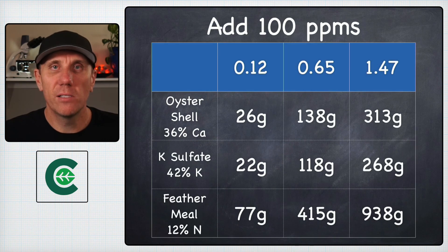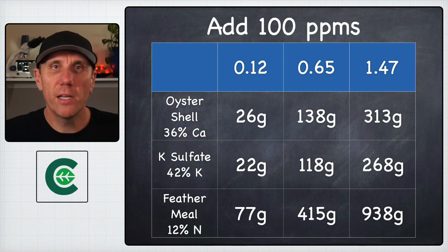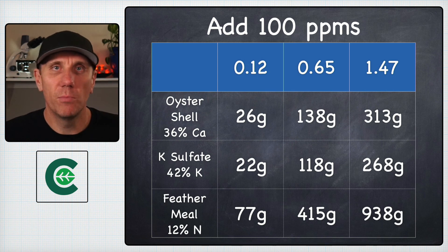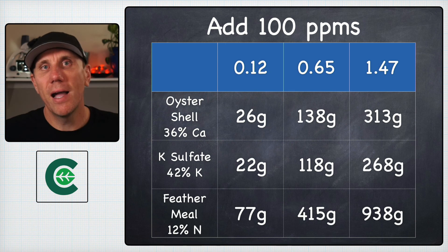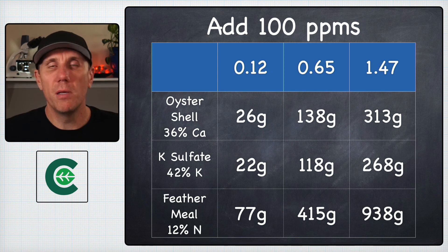Here's a chart that explains what that would look like. If we're trying to increase a given soil by 100 parts per million at our three different bulk densities - the 0.12 at the low range of our potting soil, 0.65 at the high range of our potting soil, and the 1.47 which is what a native soil might or should be.